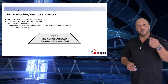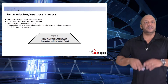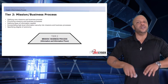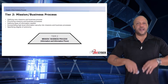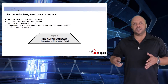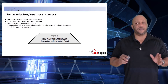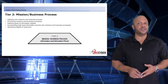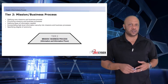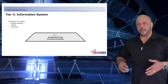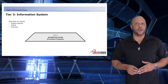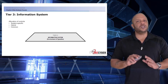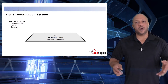Tier 2 is for mission and business processes. Defining the core missions and business processes, the information and information flow, prioritizing missions and business processes, defining the types of information needed, and incorporating high-level information security into missions and business processes all happen at Tier 2. Finally, Tier 3 is the information system, where you handle the specific allocation of security controls, whether they are system-specific, hybrid, or common.